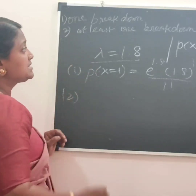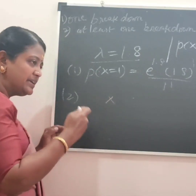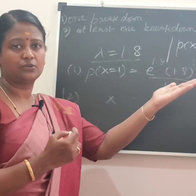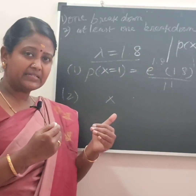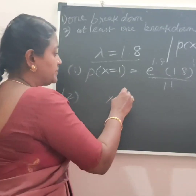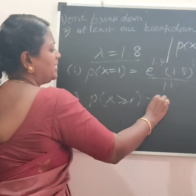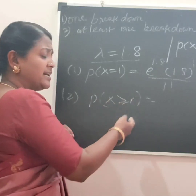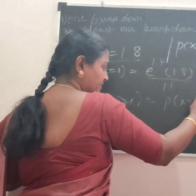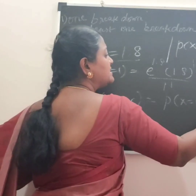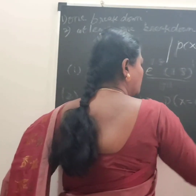Second subdivision: at least one breakdown. At least one means X greater than or equal to 1. This includes X equal to 1, X equal to 2, X equal to 3, and so on.